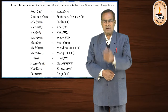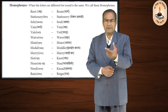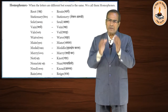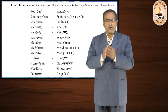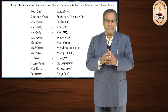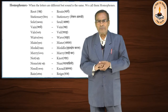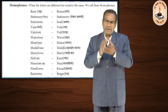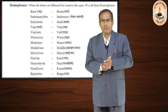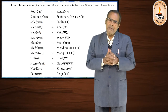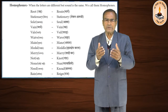When we study the use of words, we see that there are some words which have the same sound, but their composition is different — different letters are used to make those words. When the letters are different but the sound is the same, we call them homophones. These words have different meanings because of their different structure.